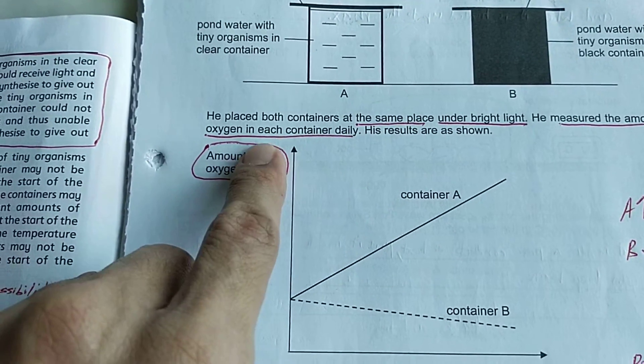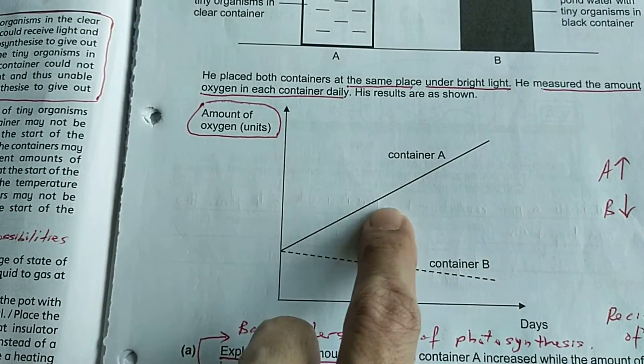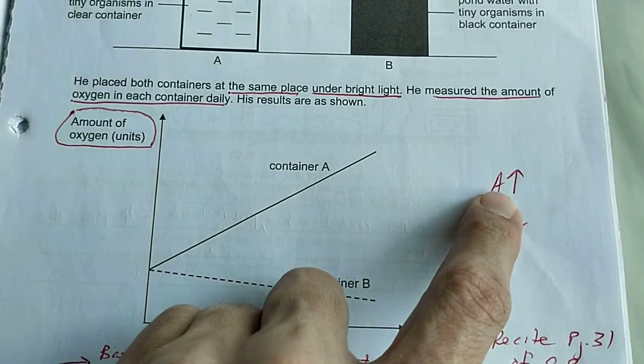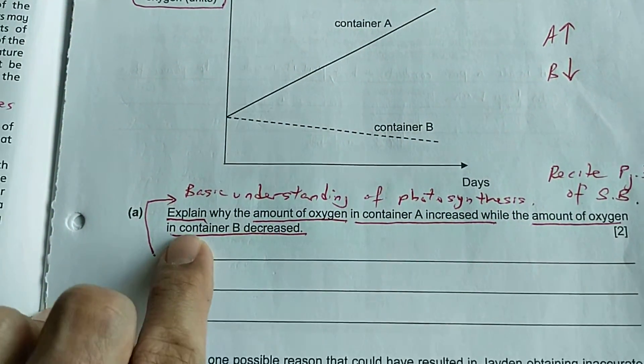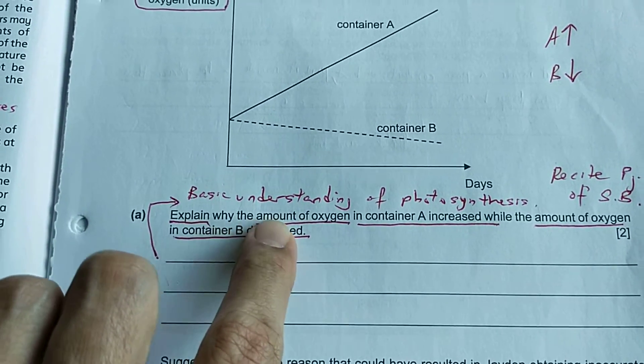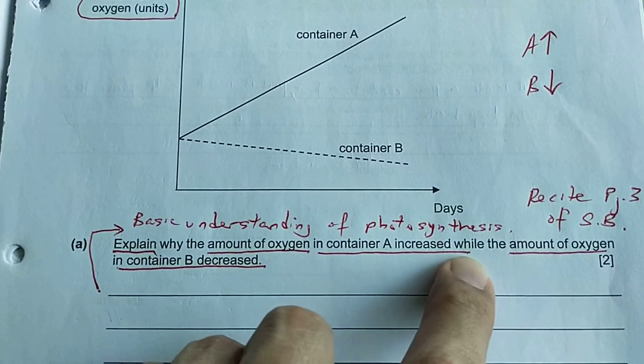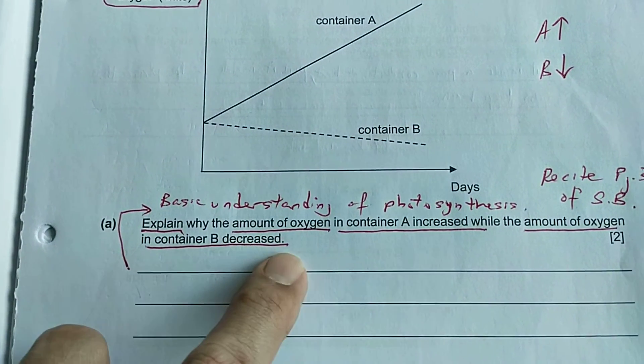Circle the amount of oxygen, and you can see as the days progress, container A increases, container B decreases. I will ask them to write by the side A goes up B comes down. Part A says explain why the amount of oxygen in container A increased while the amount of oxygen in container B decreased.